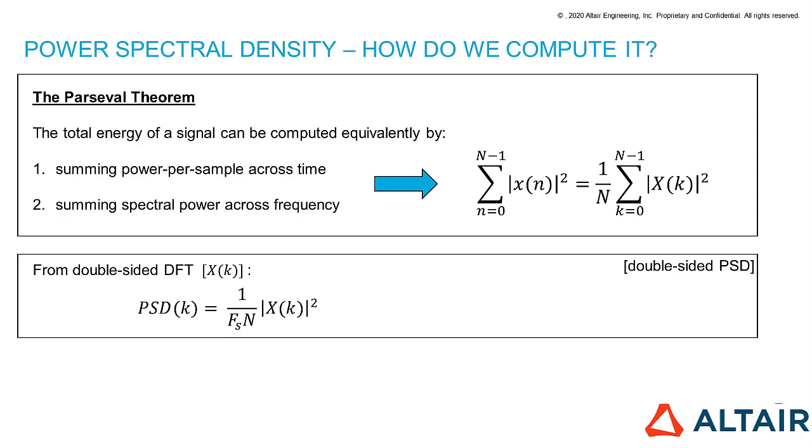We want to get the power spectral density. So, what we have to do is to divide the spectral power by the frequency range we are spanning. And for the double-sided discrete Fourier transform, the width of this frequency range is the sampling frequency, since we are going from minus half of the sampling frequencies to half of the sampling frequency. And this is the formula for the double-sided power spectral density.